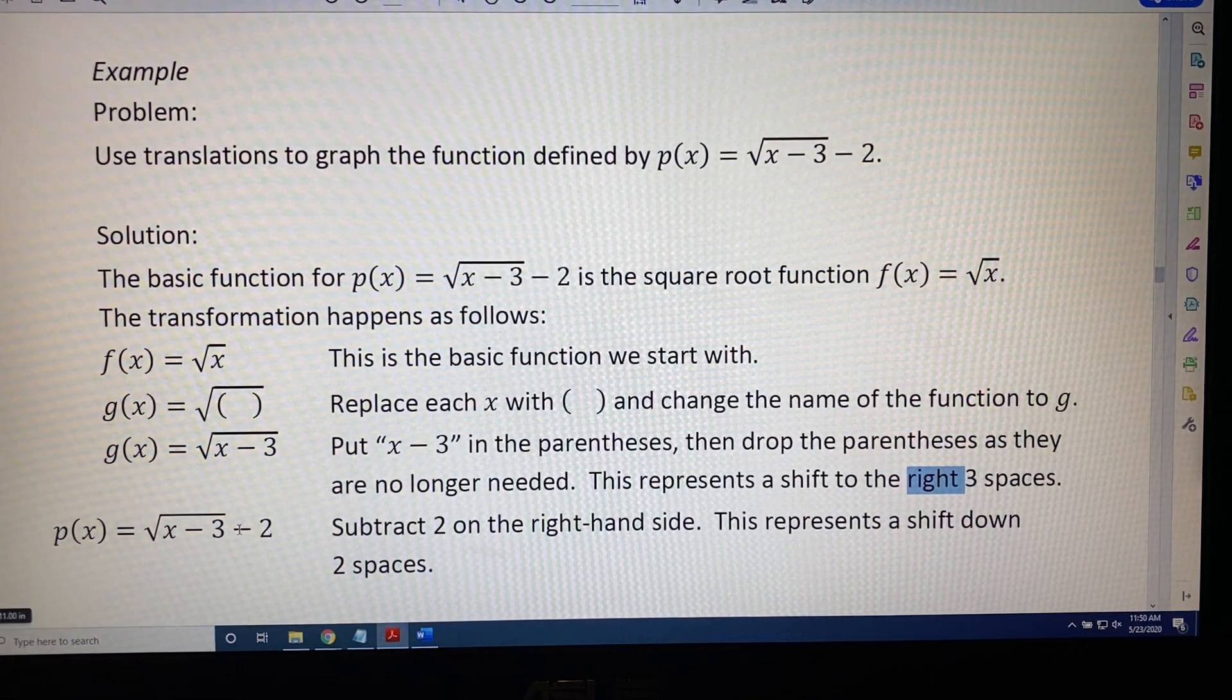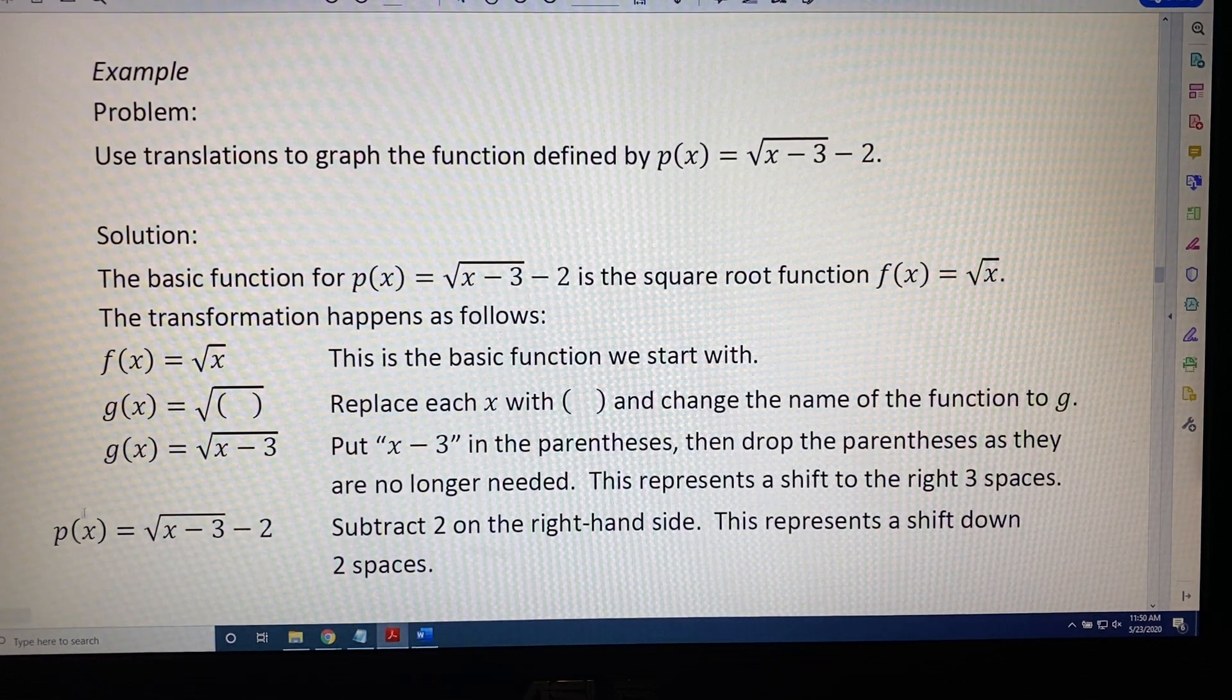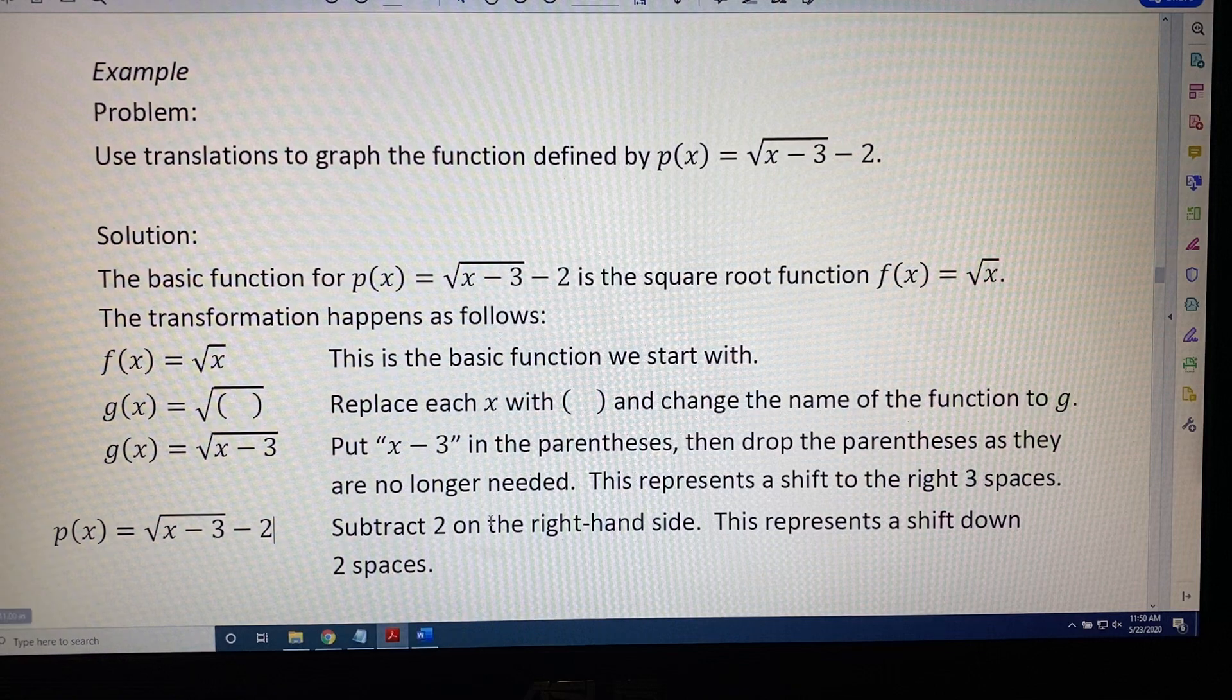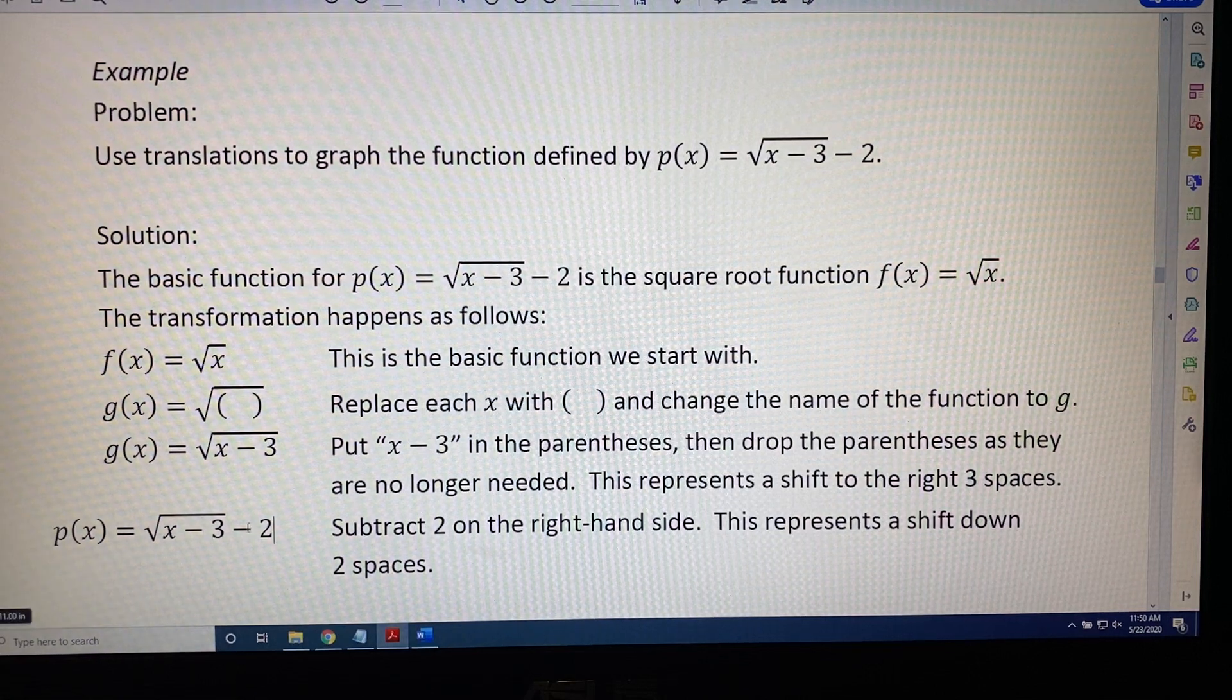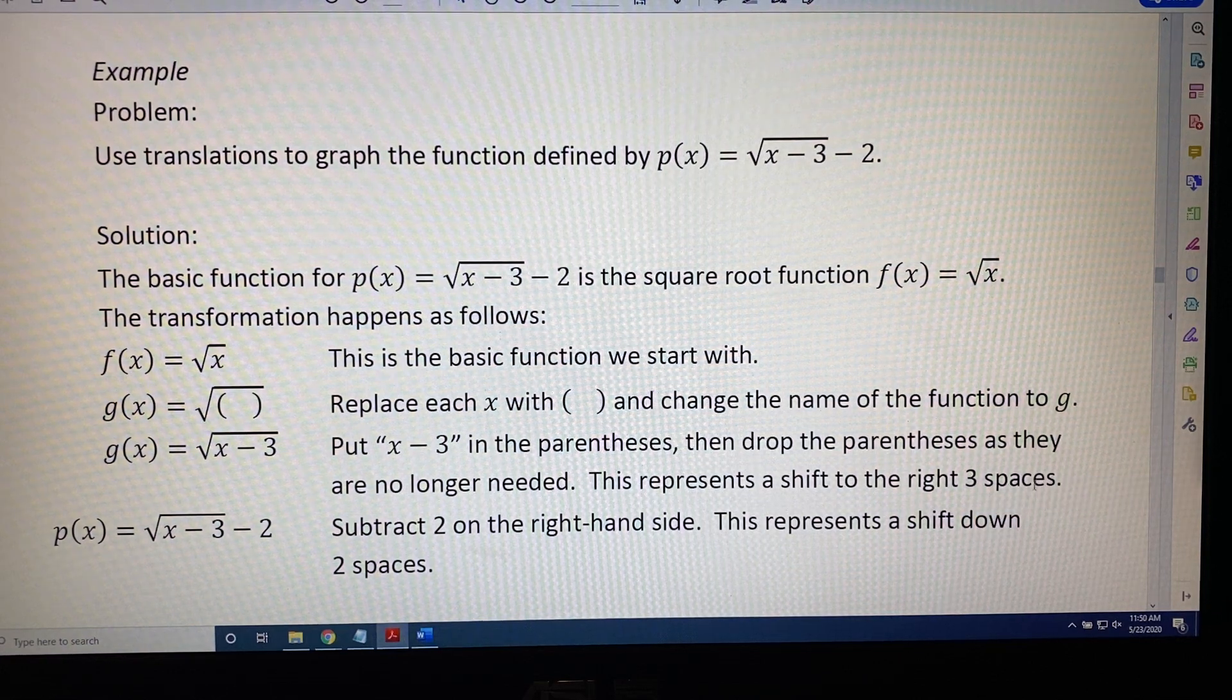Finally, we put a subtract 2 on the outside of the square root and change the name from g to p because we've changed the equation. The subtract 2 on the outside represents a shift down two spaces.